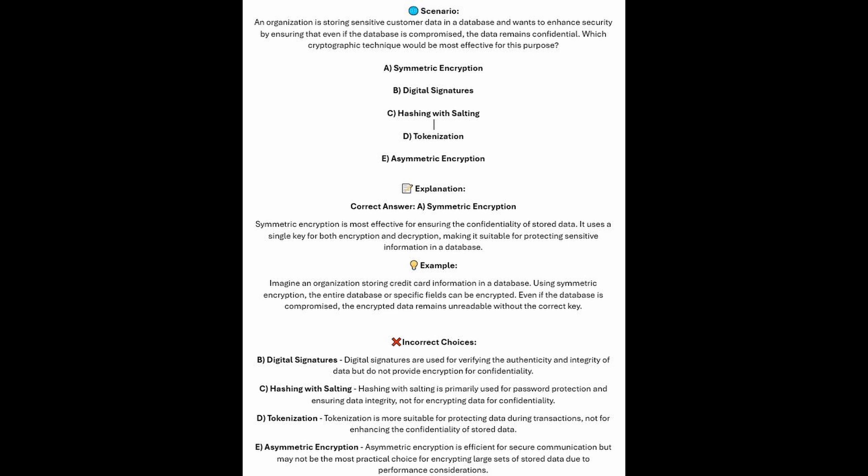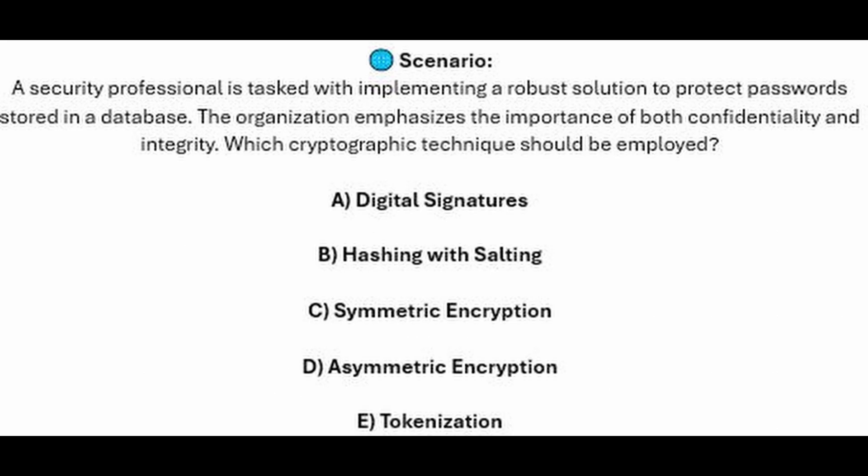And now for the incorrect answers. Digital signatures are used for verifying the authenticity and integrity of data, but do not provide encryption for confidentiality. Hashing with salting is primarily used for password protection and ensuring data integrity, not for encrypting data for confidentiality. Tokenization is more suitable for protecting data during transactions, not for enhancing the confidentiality of stored data. And asymmetric encryption is efficient for secure communication, but may not be the most practical choice for encrypting large sets of stored data due to performance considerations.